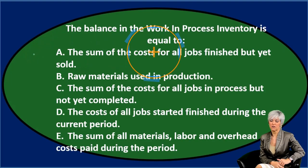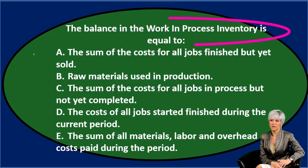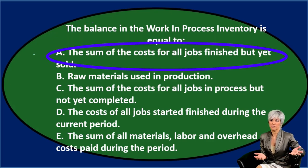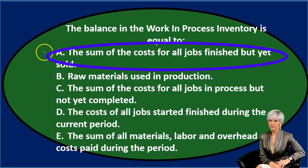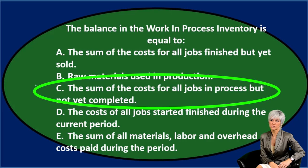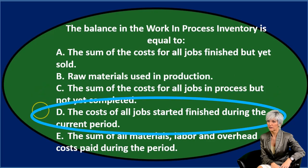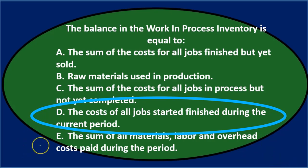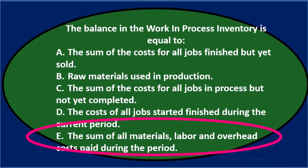Next question: the balance in the work in process inventory is equal to — A, the sum of the costs for all jobs finished but not yet sold; B, raw materials used in production; C, the sum of costs for all jobs in process but not yet completed; D, the costs of all jobs started and finished during the current period; or E, the sum of all materials, labor, and overhead costs paid during the period.